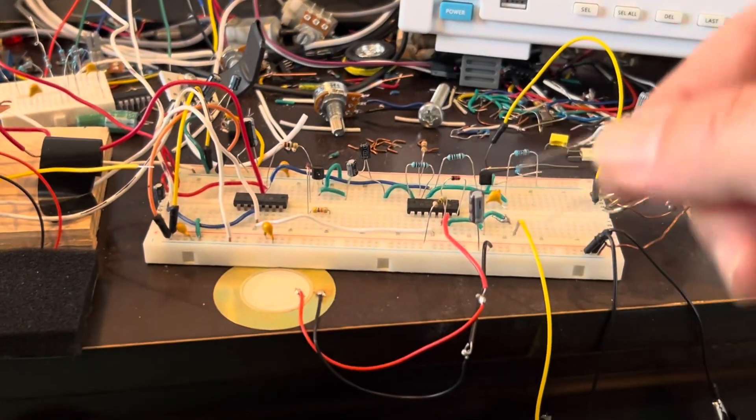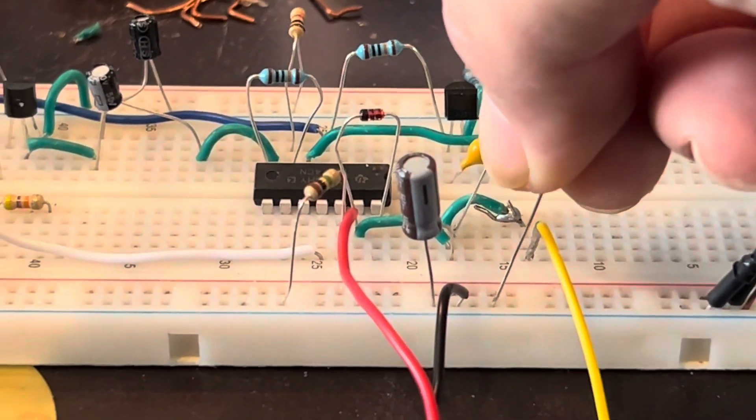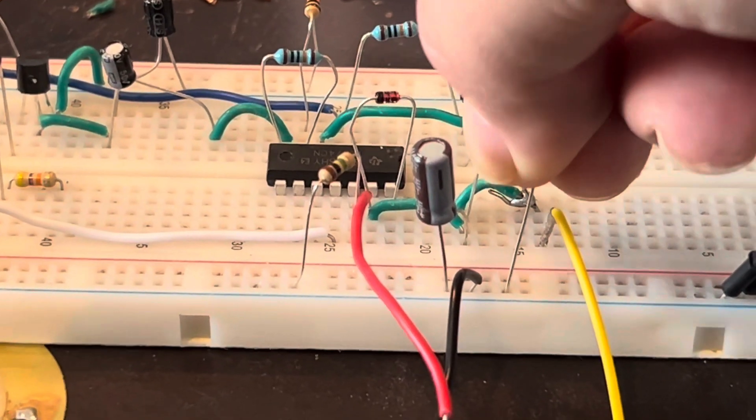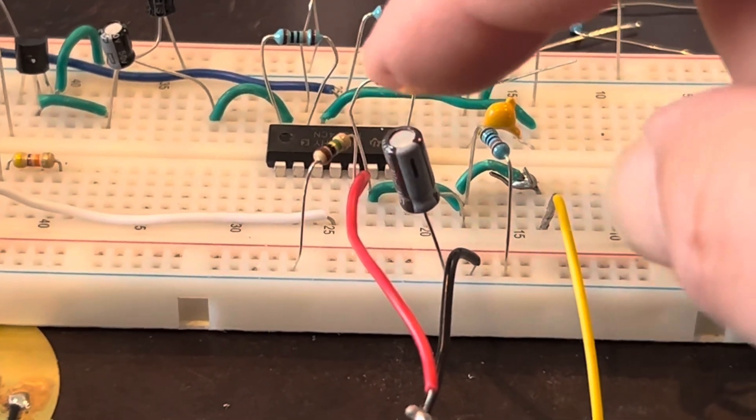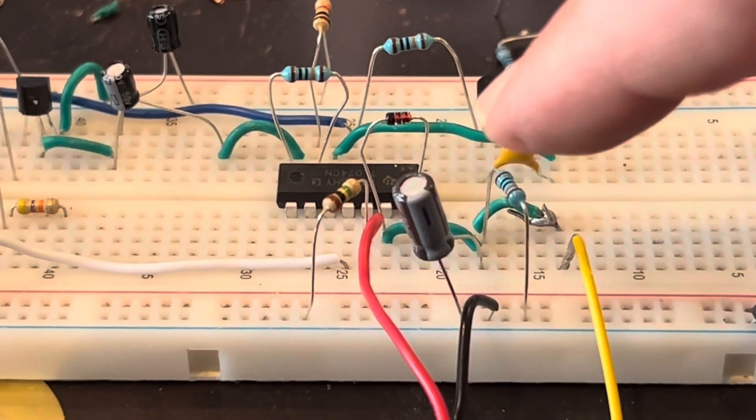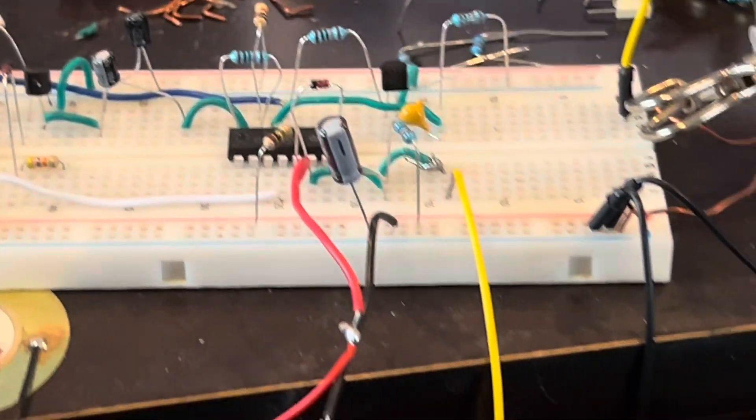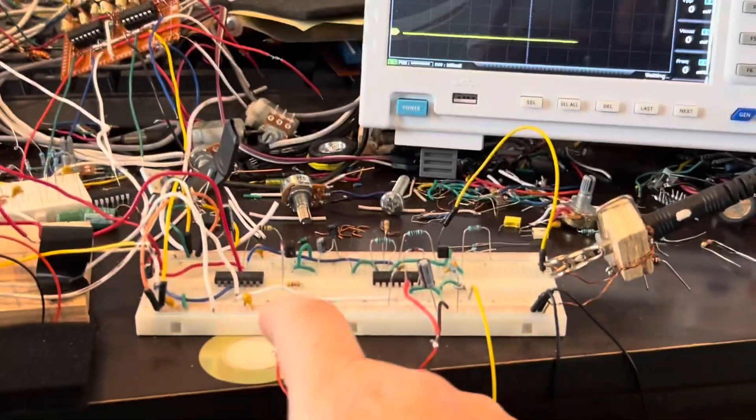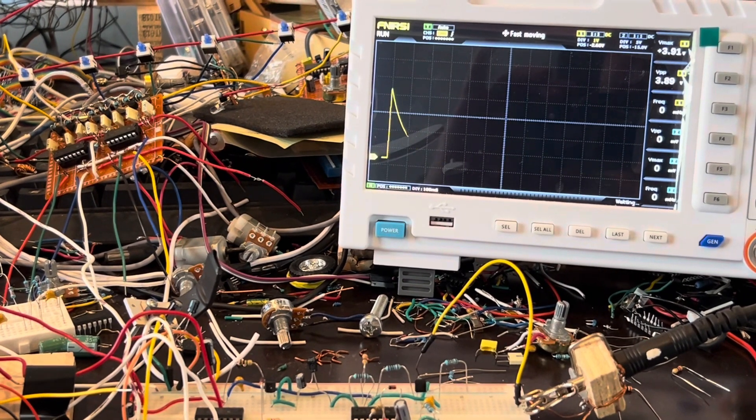So now, we're going to take a 100K resistor here. And we're going to put it in that same spot. So now, we have that short burst trigger signal that comes from the op amp. It'll charge the capacitor and then discharge through this larger resistor. And so that creates an envelope. So let's see what that looks like when we trigger the piezo. That's a lot nicer with a nice smooth decay.